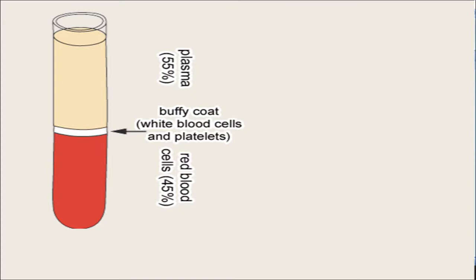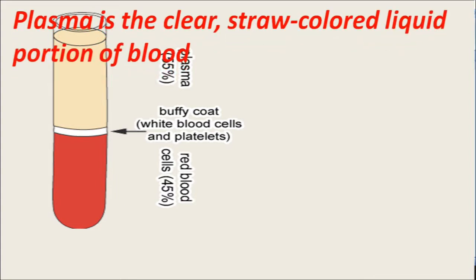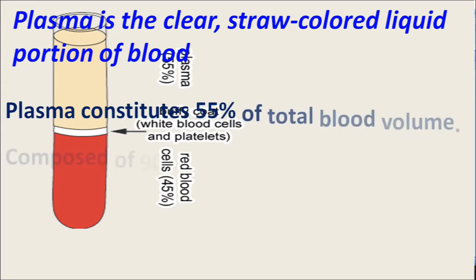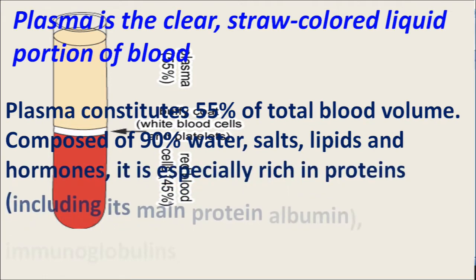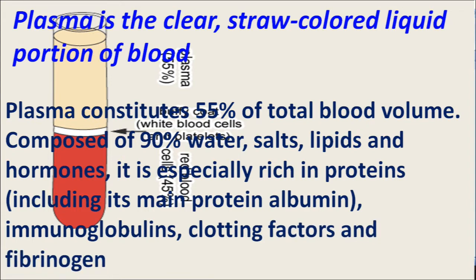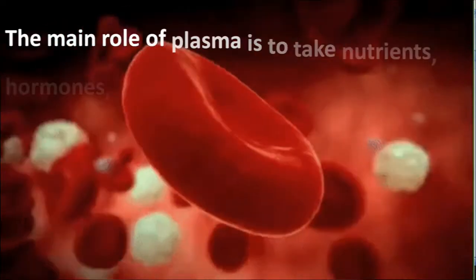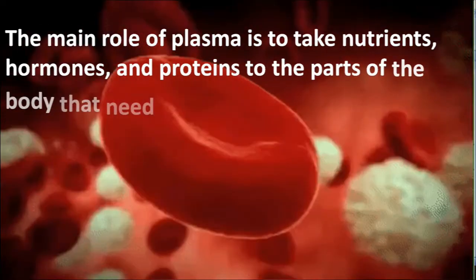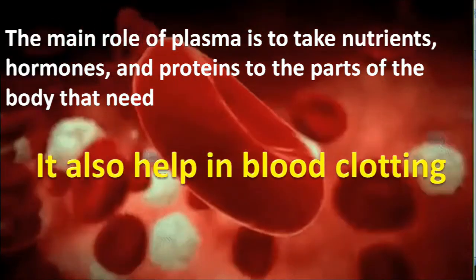Plasma is a clear, straw-colored liquid portion of blood. Plasma constitutes 55% of total volume and is made up of 90% water, salts, lipids, and hormones. It is especially rich in proteins, containing albumin proteins, immunoglobulin proteins, clotting factors, and fibrinogen. The main role of plasma is to transport dissolved nutrients and hormones, and it also helps in blood clotting with platelets.